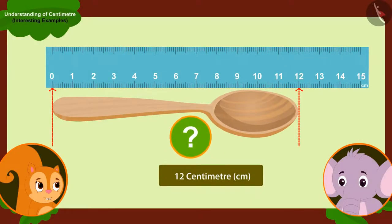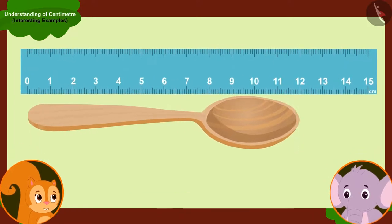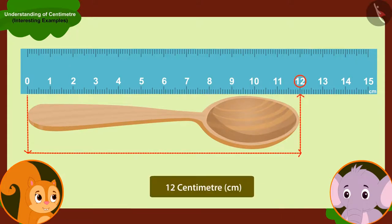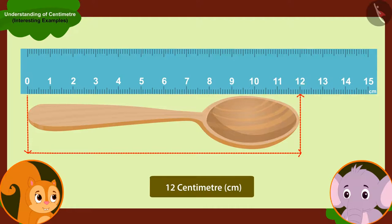Chanda could not understand how Appu found this out. Appu said to her, whenever you have to measure the length of any object, you place it next to the ruler in this way and start measuring from zero. The number which is reaching the other end of your object, the length of your object will be that centimeter.